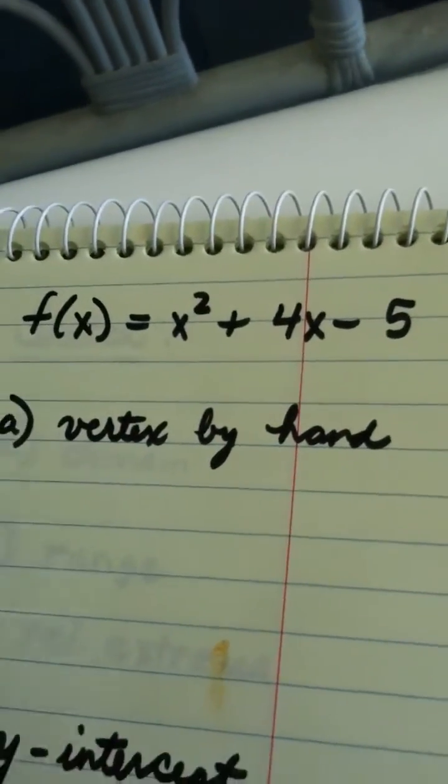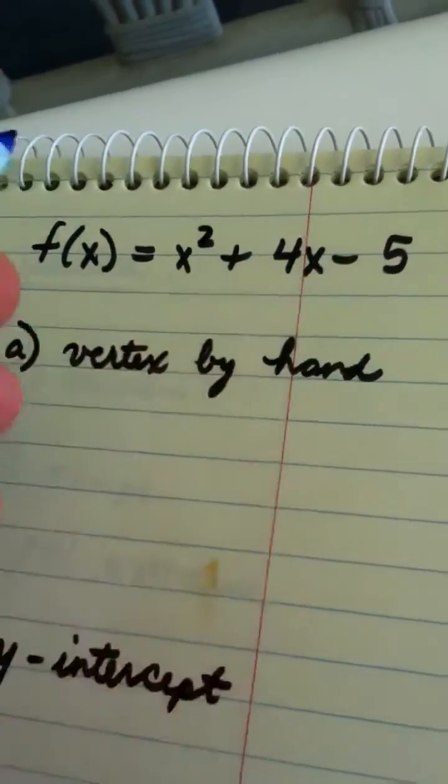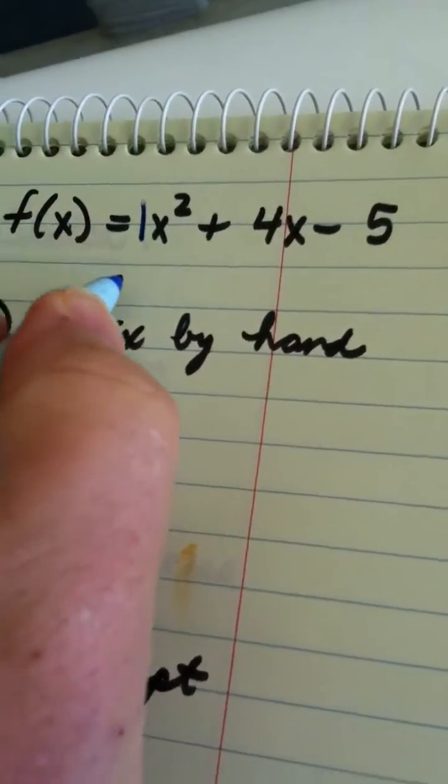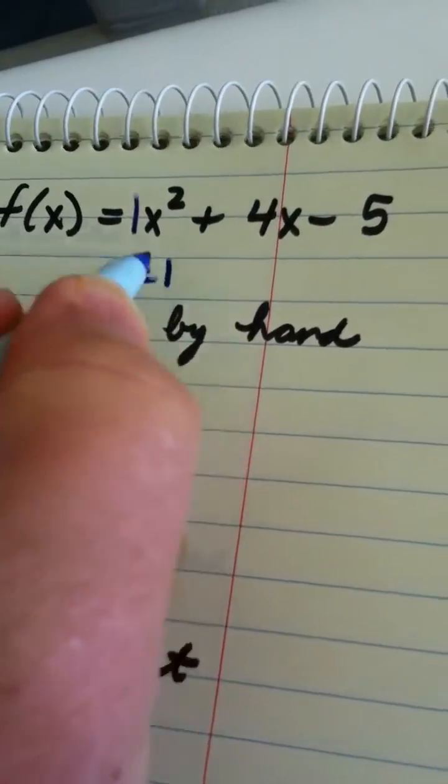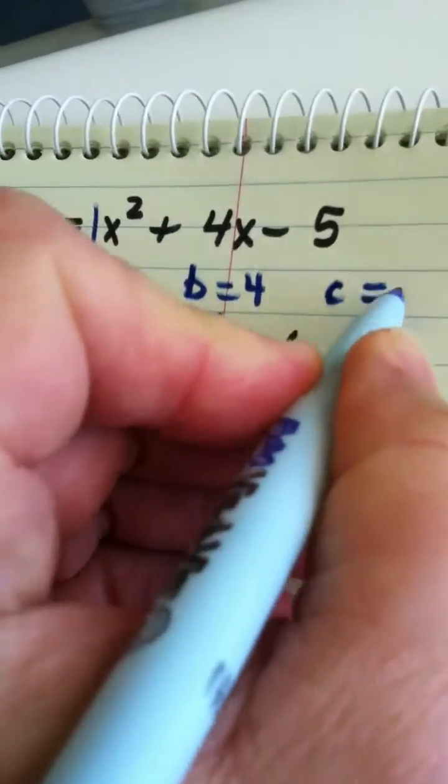All right ladies and gentlemen, here's the function f(x) equals x squared plus 4x minus 5. That lets me know that a is 1, b is 4, and c is negative 5.